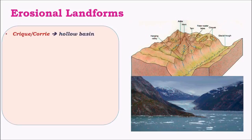The first one is a cirque, or corrie, which is a hollow basin covered on three sides by the slope of the mountain, and on one side it is open for water to flow. Once the ice in these cirques melts, it gives rise to a feature called a tarn — very similar to a cirque but containing water instead of ice.